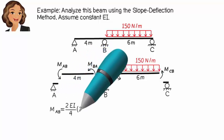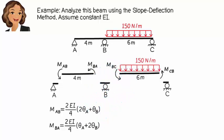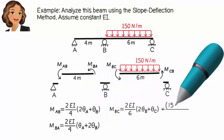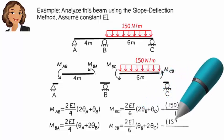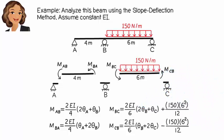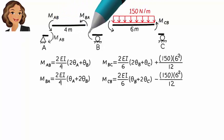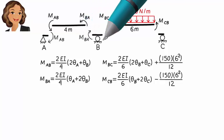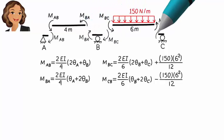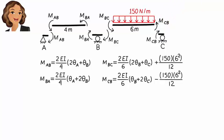For segment AB, we get the slope-deflection equations. For segment BC, we have the corresponding equations. Now we show the member-end moments acting at each joint, then write the joint equilibrium equations — we have three of them.